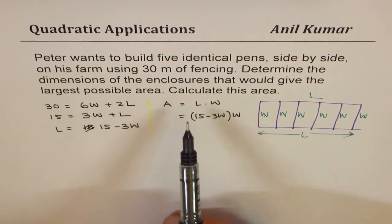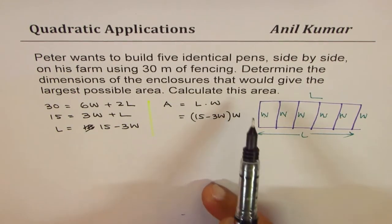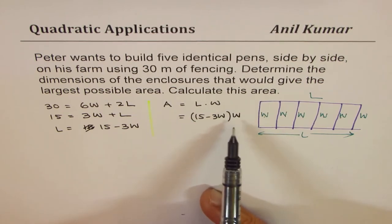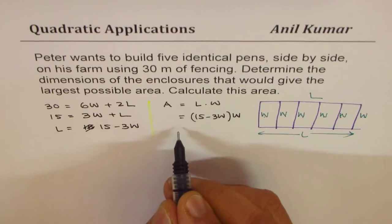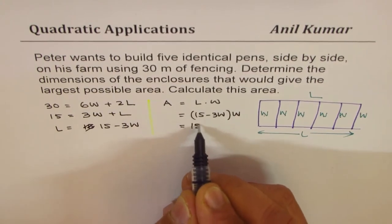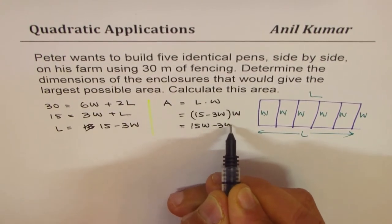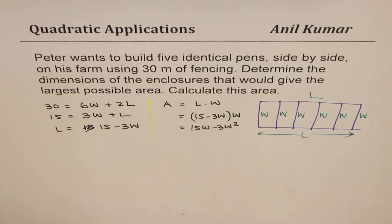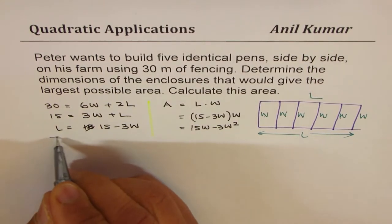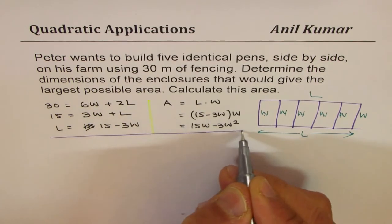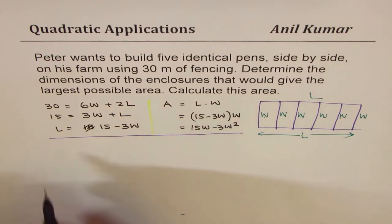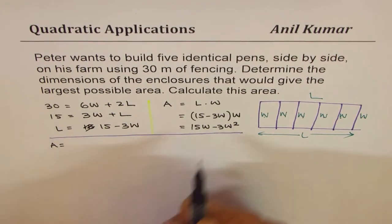We want to find the dimensions and the maximum area. The best way is to do completing the squares. If you open this, we get 15W minus 3W². Let's do completing the squares from here and figure out the width. Once we get the width, we know the length and the area.